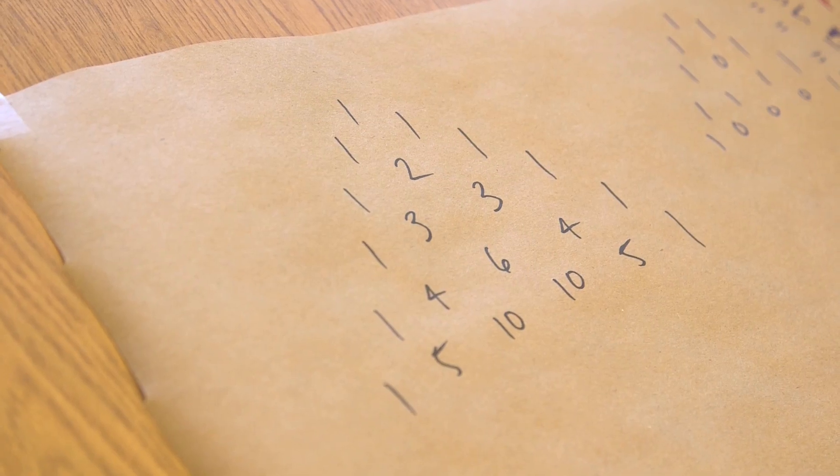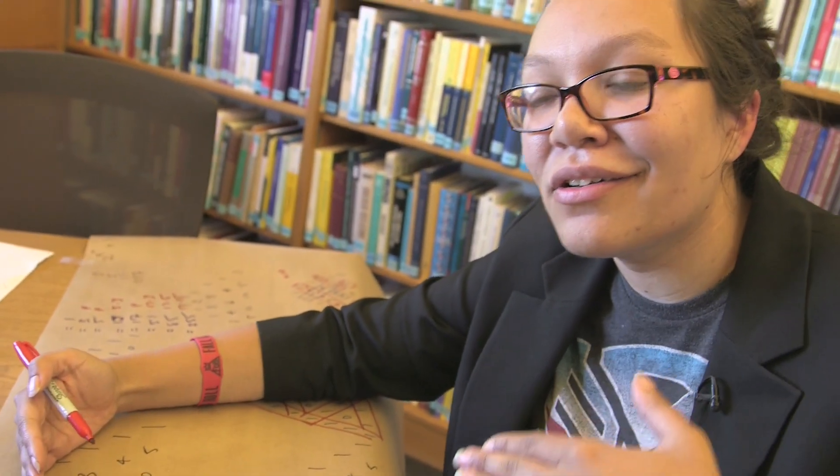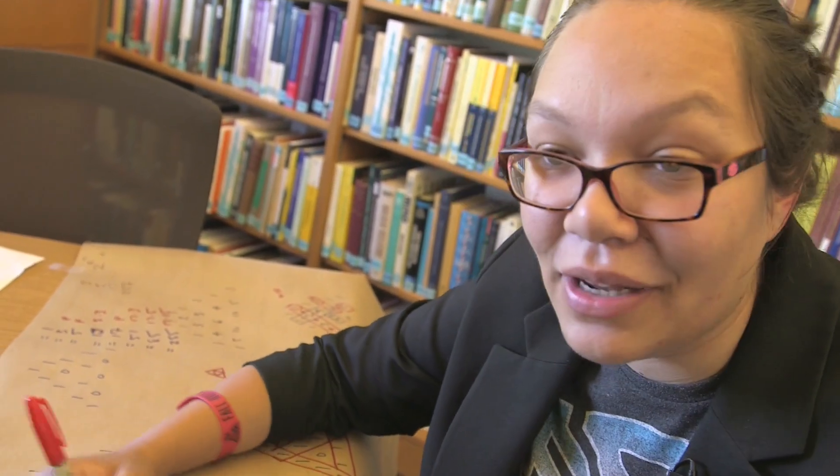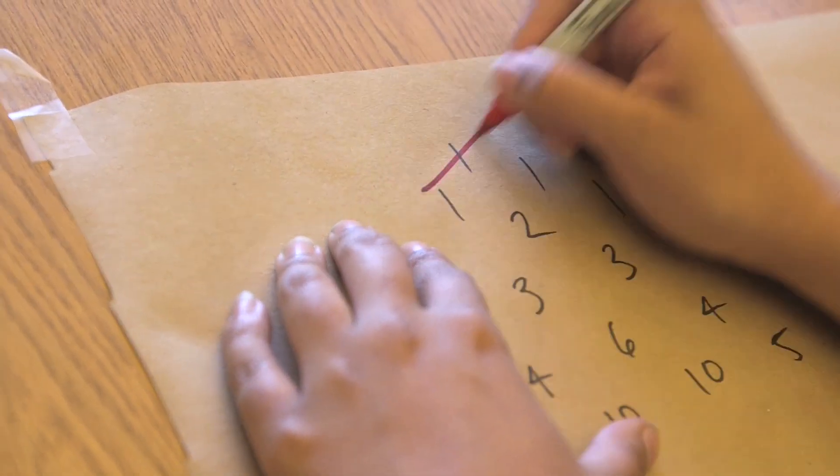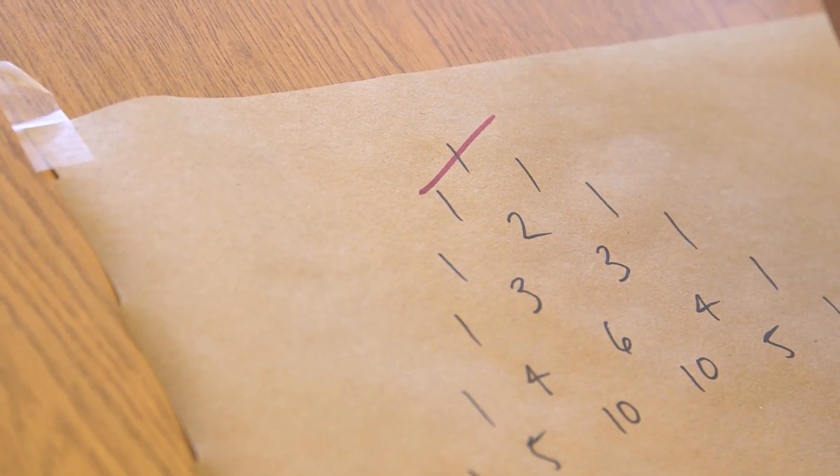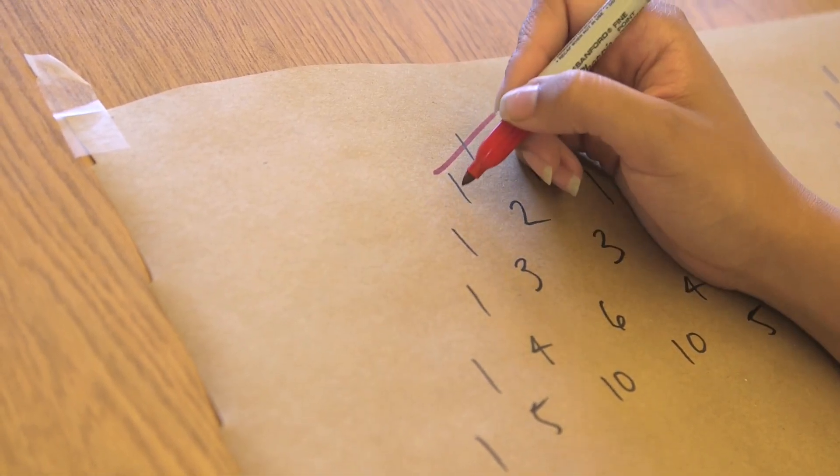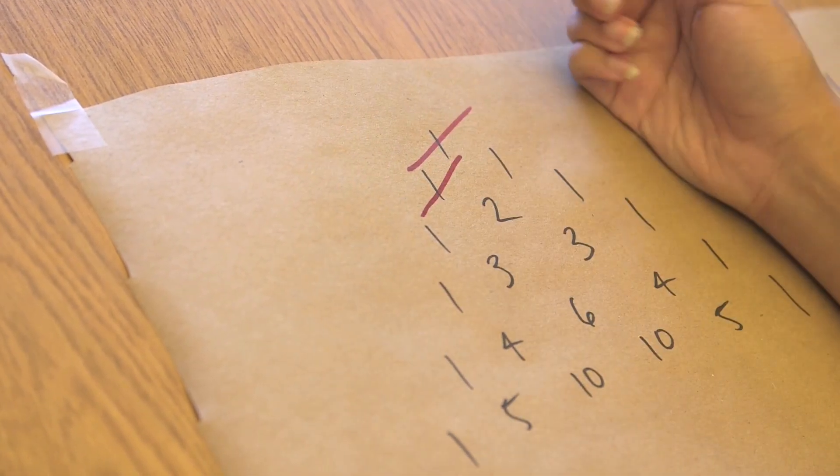So for example the first Fibonacci number is one, so that's my shallow diagonal. And then this one doesn't have any other shallow neighbor so it's just by itself also. So now we have one, one.